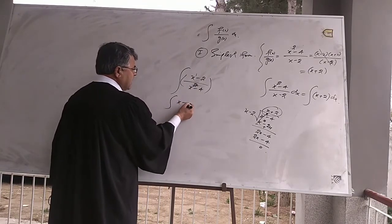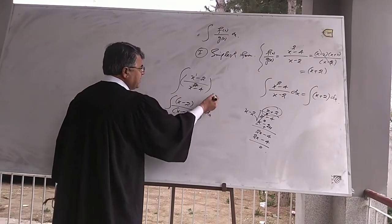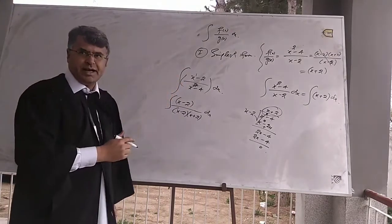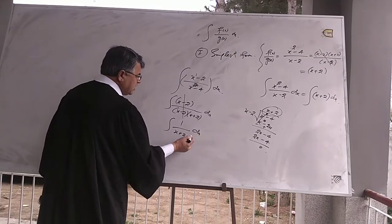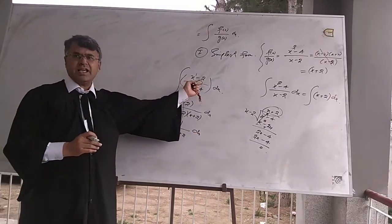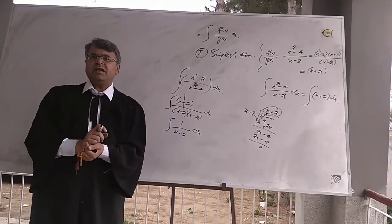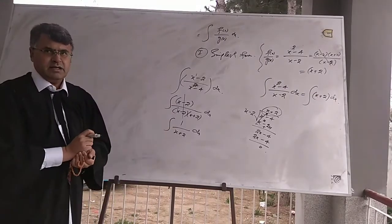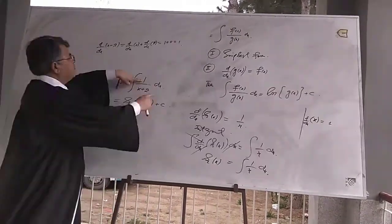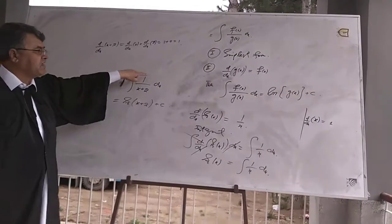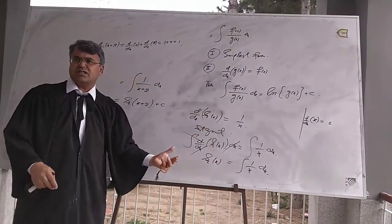But we can factorize the function in the denominator and cancel the two terms. We get 1 divided by x plus 2. This equivalent function of x minus 2 divided by x squared minus 4 is 1 divided by x plus 2, and this function is in the simplest form. Now the integration of this function is possible and we can integrate it by applying the rules of integration.